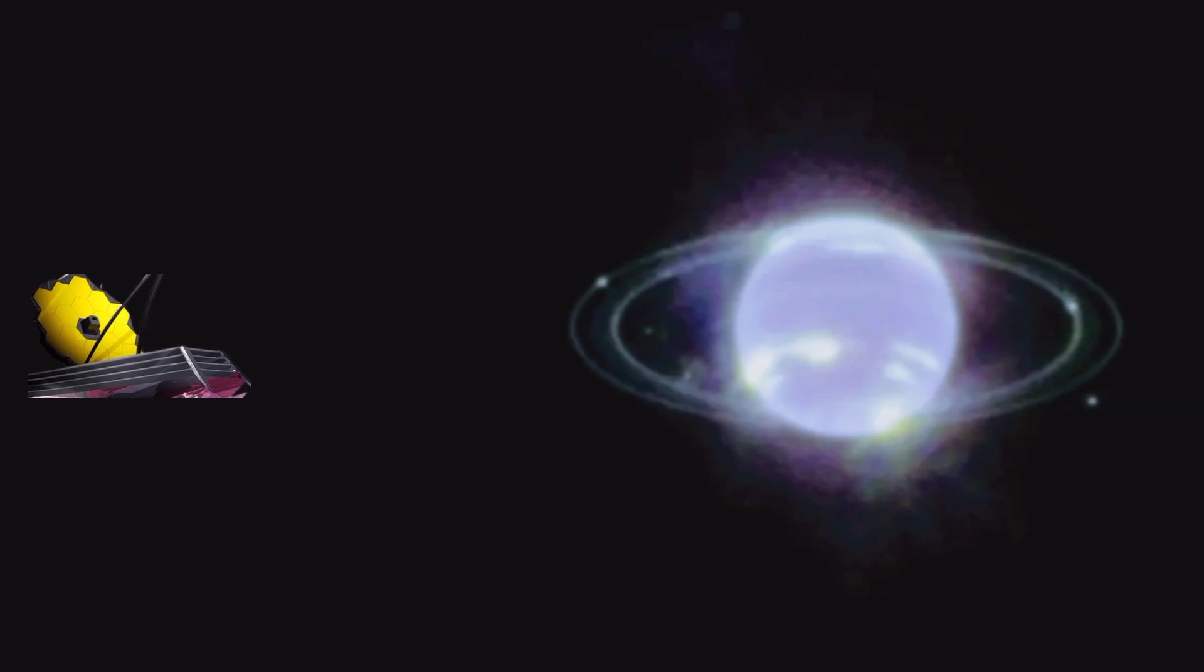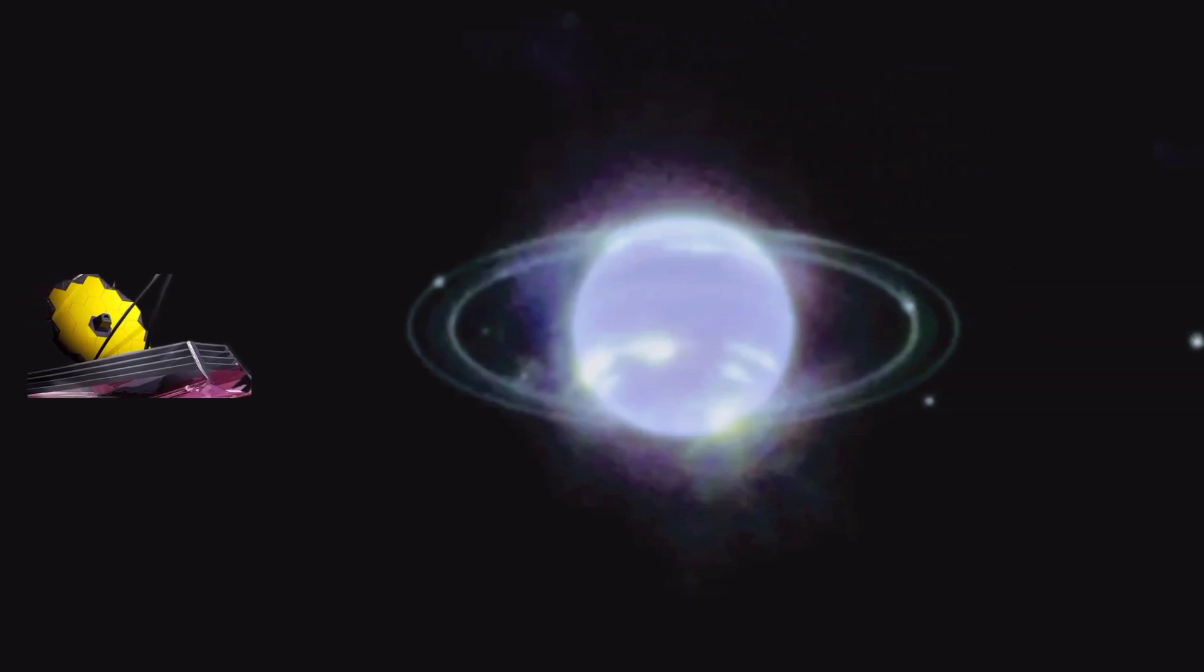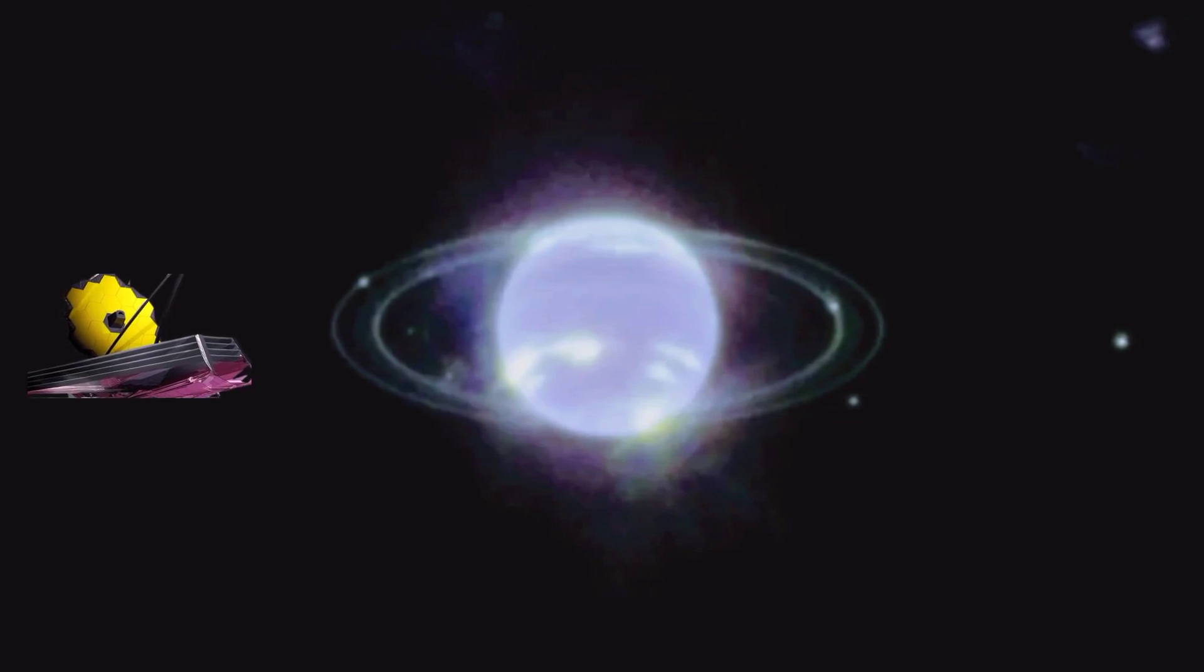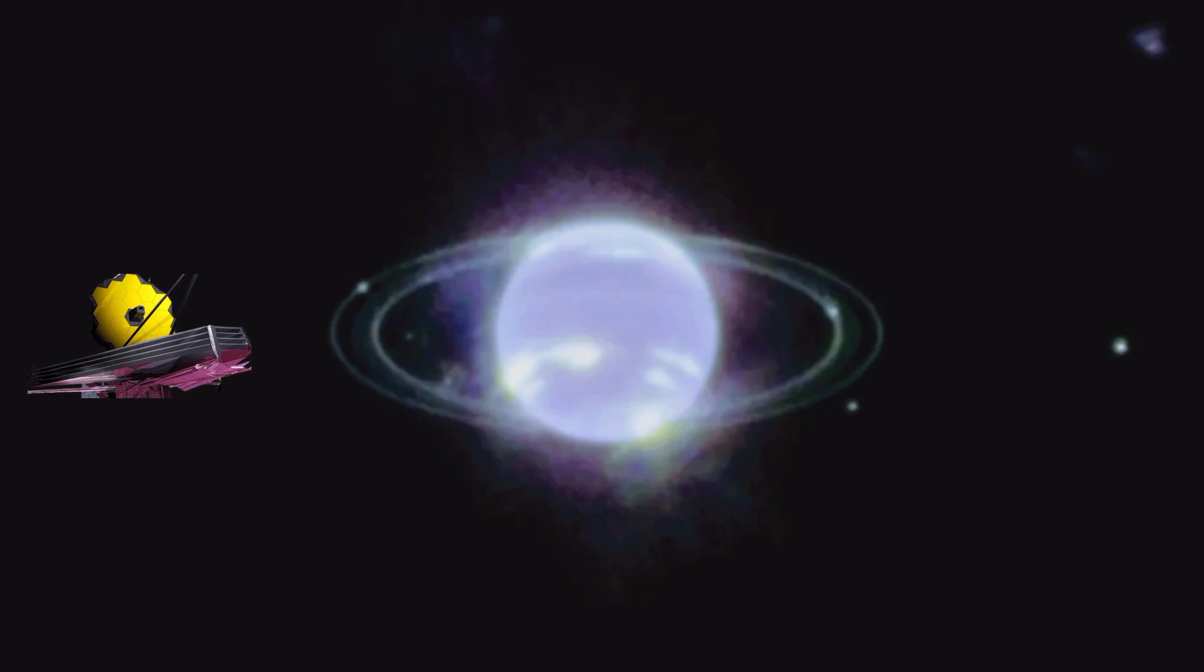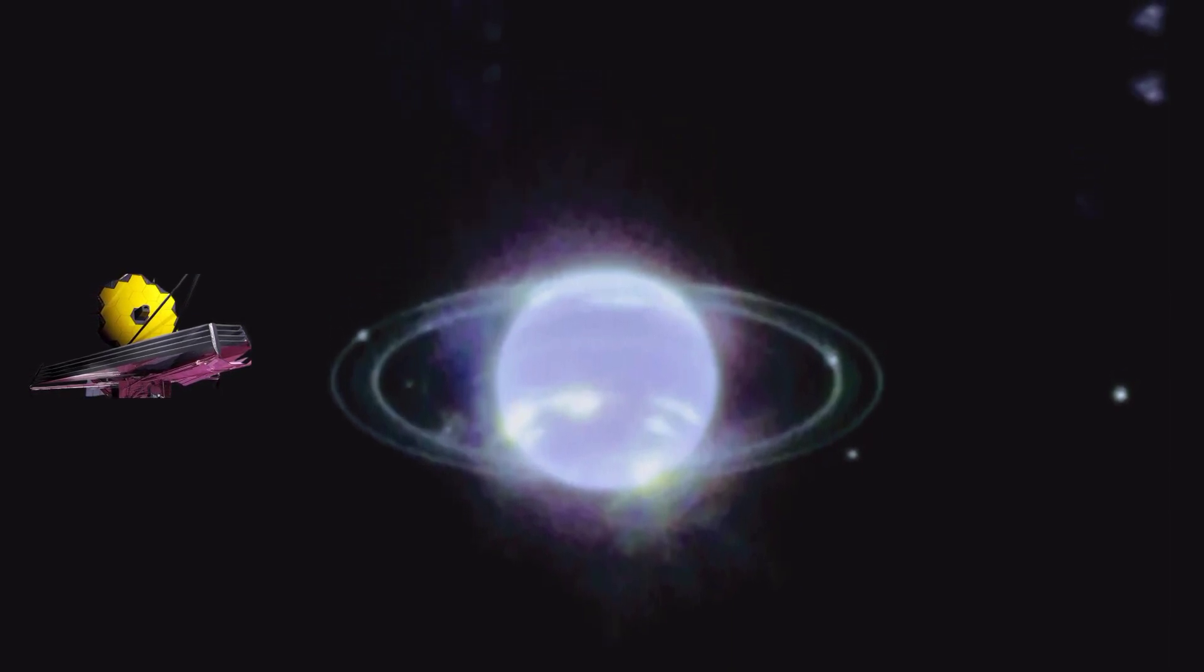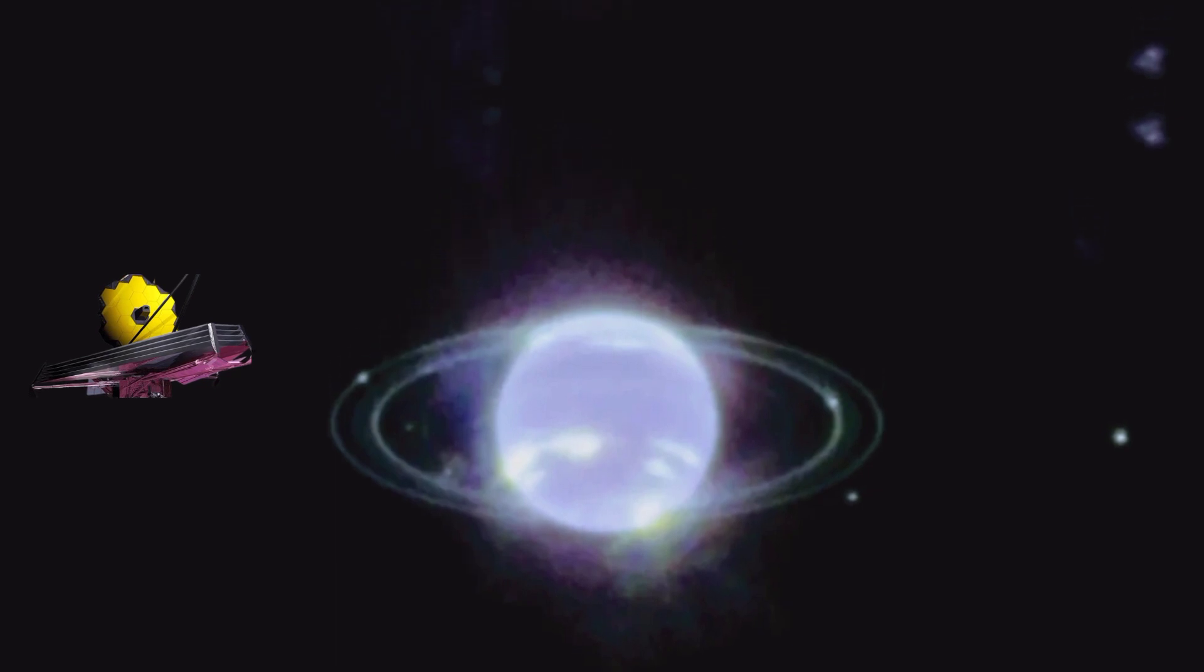Number 3. JWST's first image of Neptune shows the ice giant in spectacular detail, rings and all. The image gave astronomers their best look at Neptune in 32 years, since NASA's Voyager 2 spacecraft flew past on its journey outside the solar system. Bright patches in Neptune's southern hemisphere are high-altitude ice clouds that reflect sunlight before absorbing the cloud's methane.